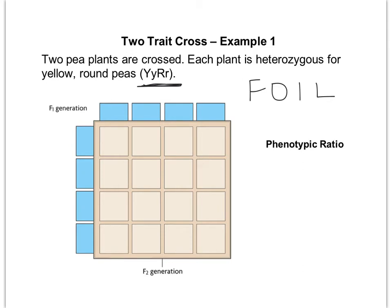I'm going to do the first of the two letters: capital Y and capital R. Then the outers — capital Y with lowercase r. Then the inners — lowercase y and capital R. And then the lasts — lowercase y, lowercase r. Since both parents are the same, that means the gametes across the top will also be the same, so I'll write those in.